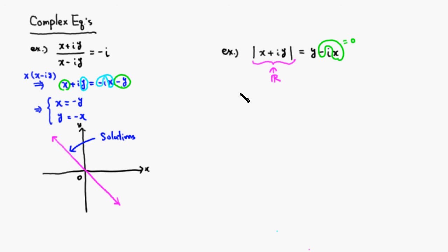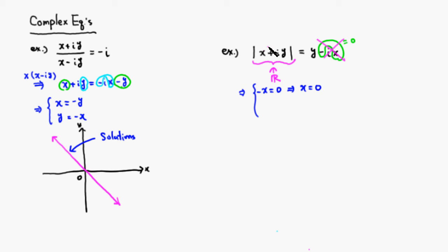This tells us that -x = 0, which means x must equal 0. So we can drop the ix term from the right-hand side. And since x = 0, we can drop it from the absolute value expression on the left as well.